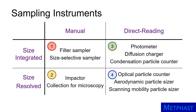There are many different types of sampling instruments. We can group these into categories including manual instruments that are size-integrated, such as filter samplers or size-selective samplers; size-resolved manual samplers, such as impactors or devices that collect samples for microscopy; direct reading instruments that provide concentration integrated over many particle sizes, such as photometers and condensation particle counters; or instruments that provide size-resolved data in real time, such as the optical particle counter, aerodynamic particle sizer, and scanning mobility particle sizer.